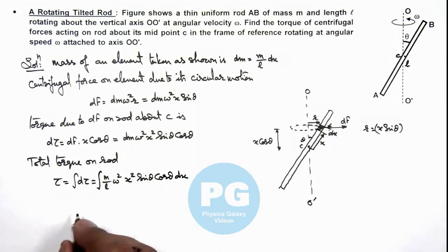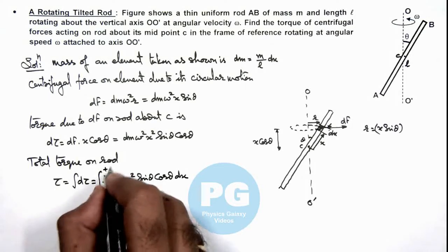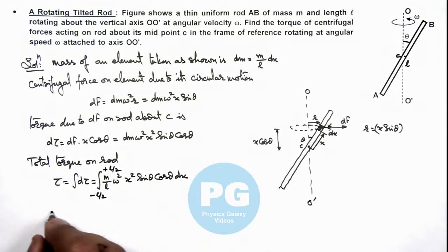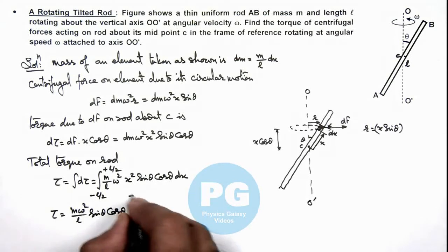And we integrate it within limits from minus l by 2 to plus l by 2. Here all constants can be taken out which are m omega square by l sine theta cos theta, and this is integration of x square dx from minus l by 2 to plus l by 2.